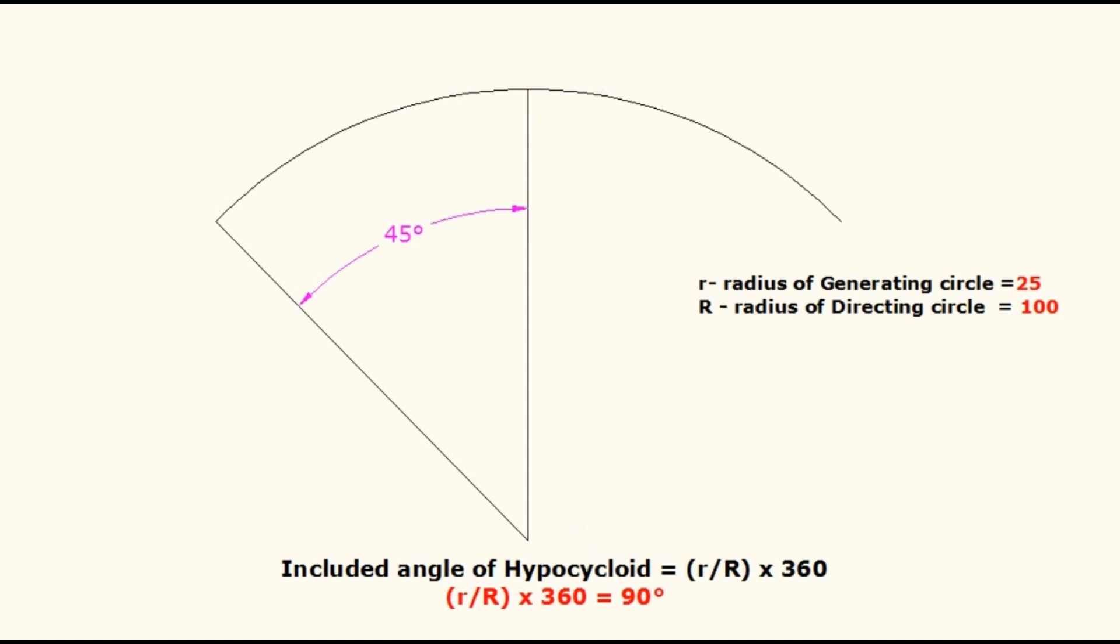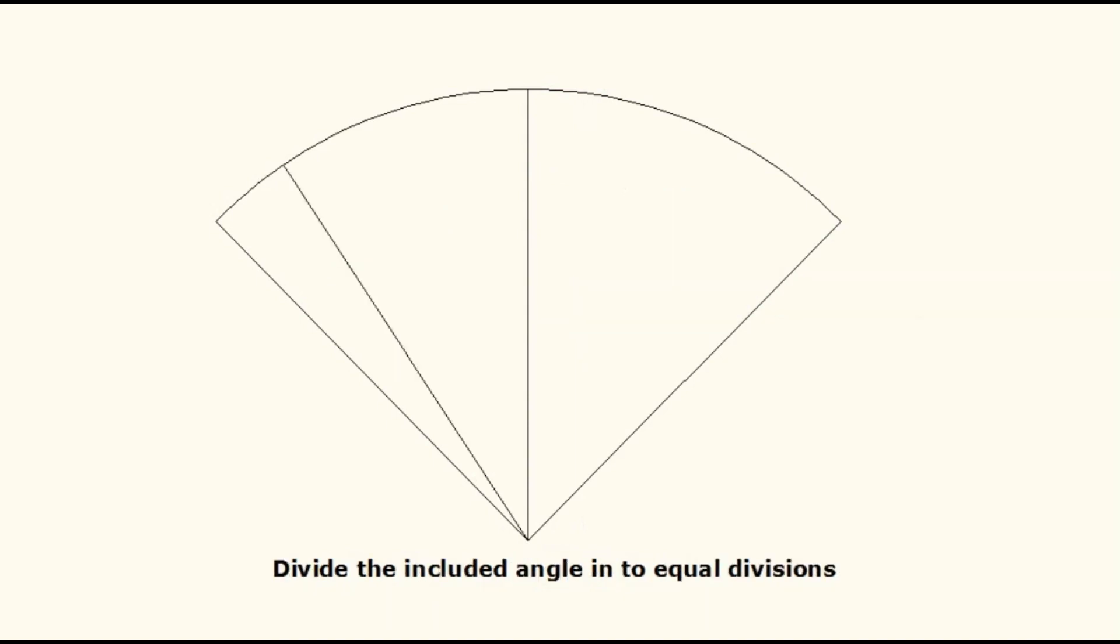Half of this angle should be taken on both sides of the vertical line. Now divide the angle into equal number of divisions.